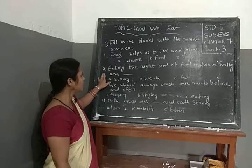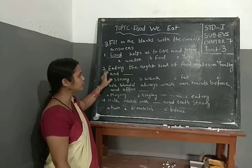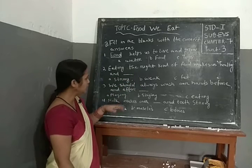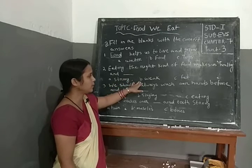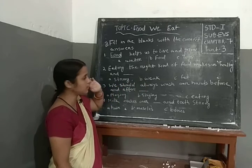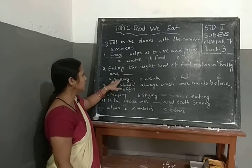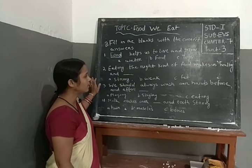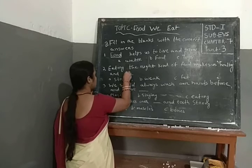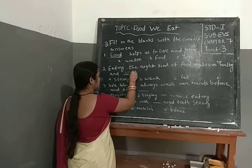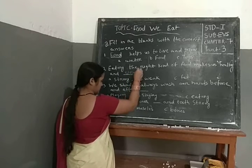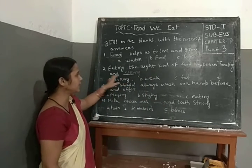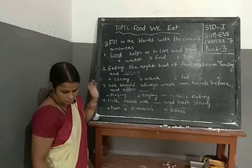Next, question number 2: eating the right kind of food makes us healthy and — number B, weak; number C, fat. Which one is the correct answer? Strong. Eating the right kind of food makes us healthy and strong.